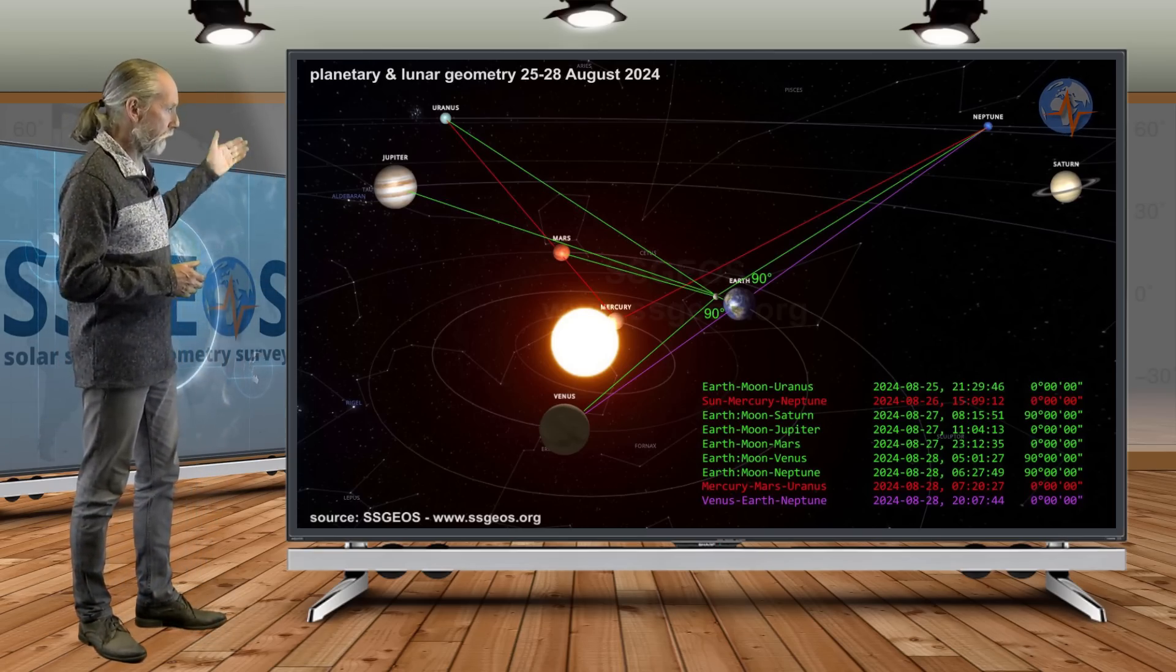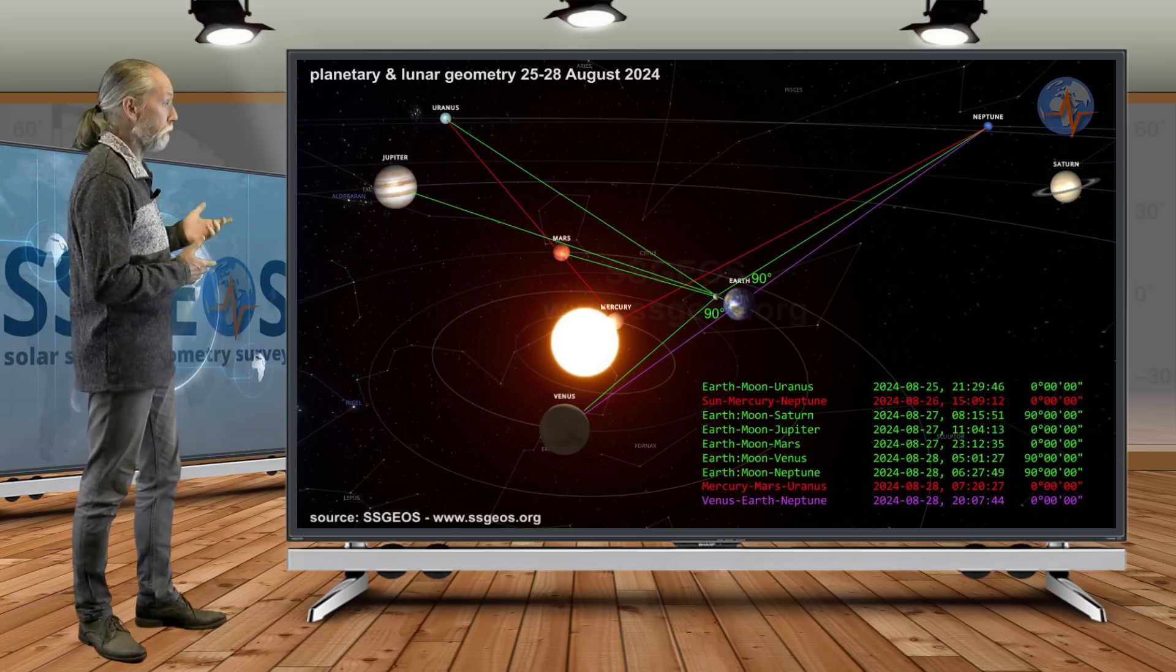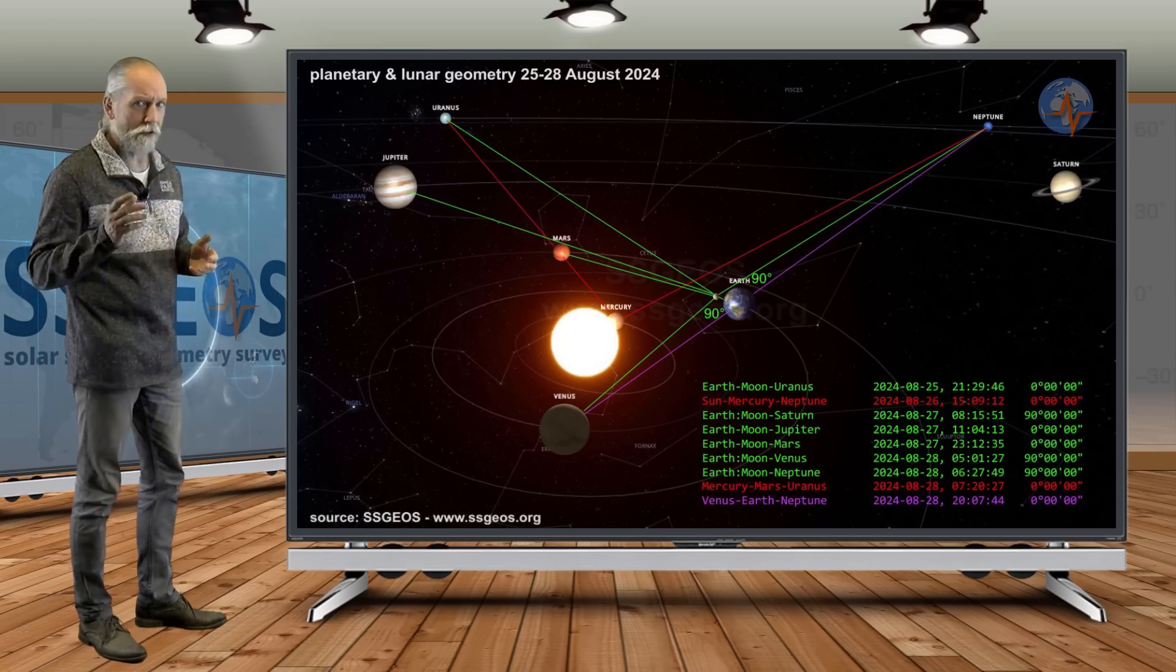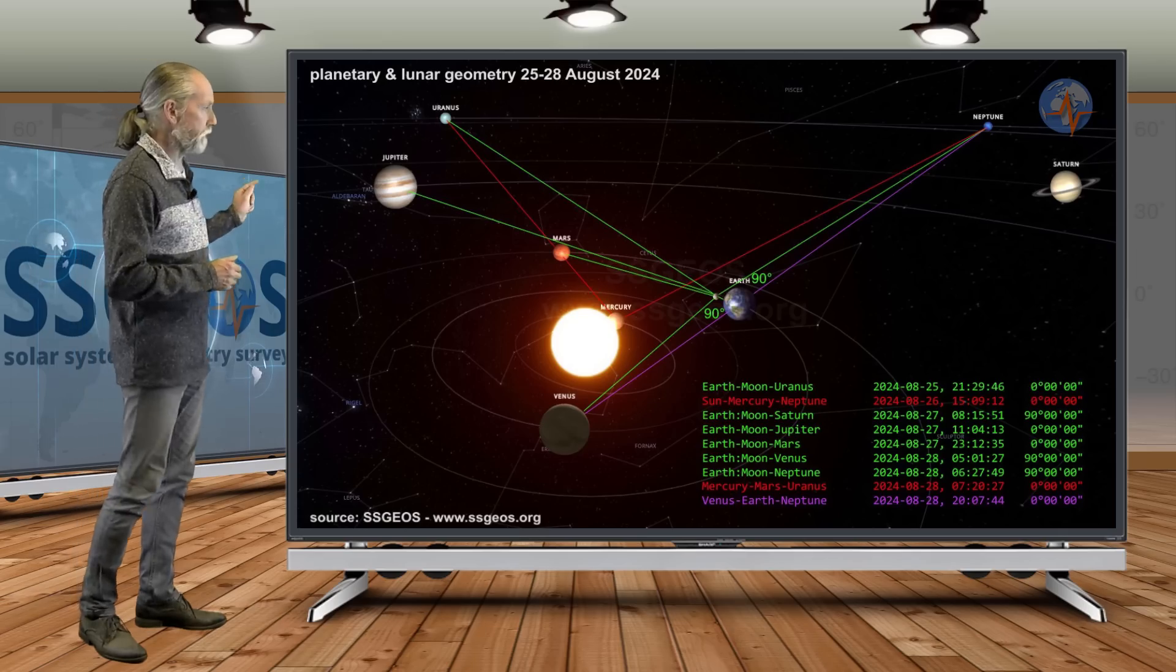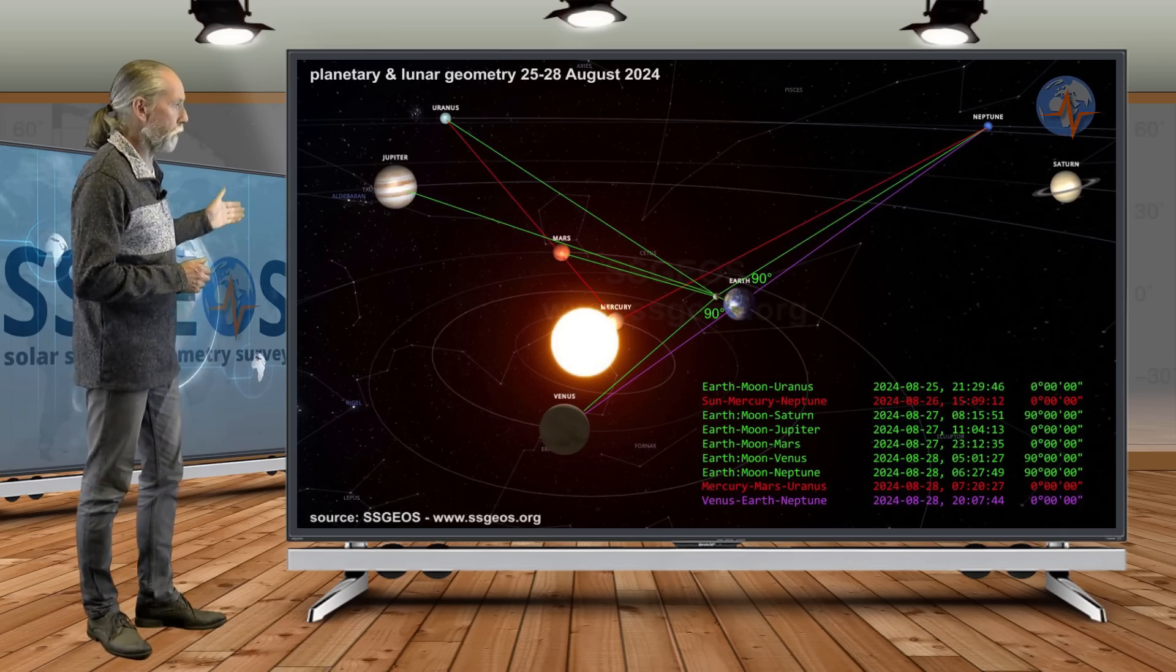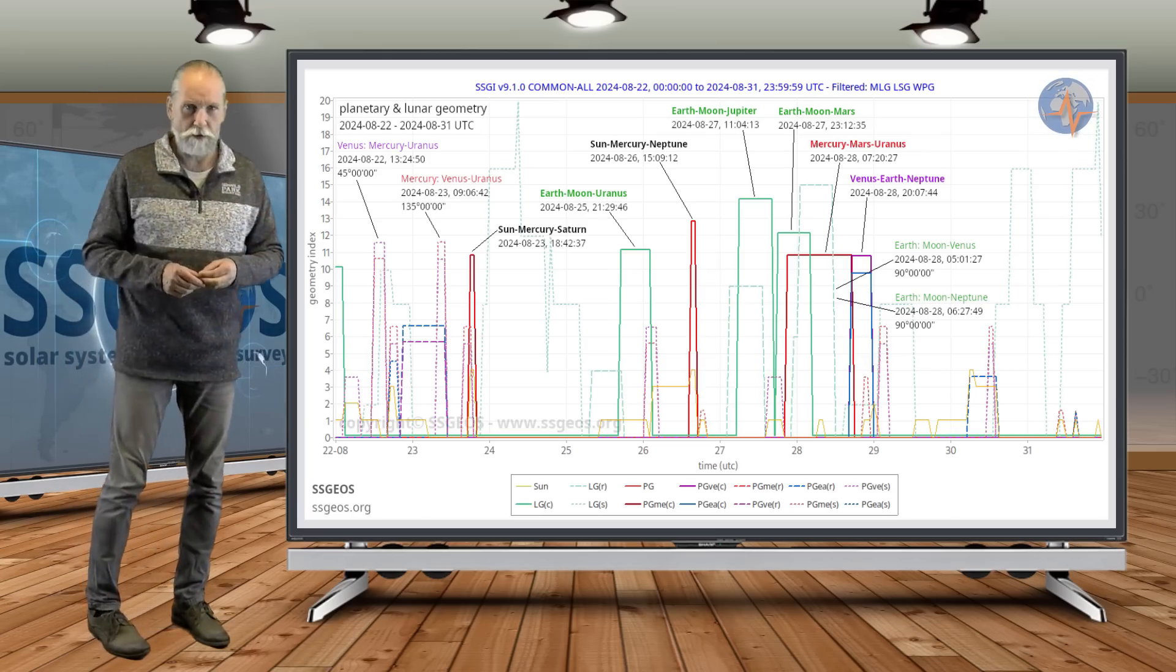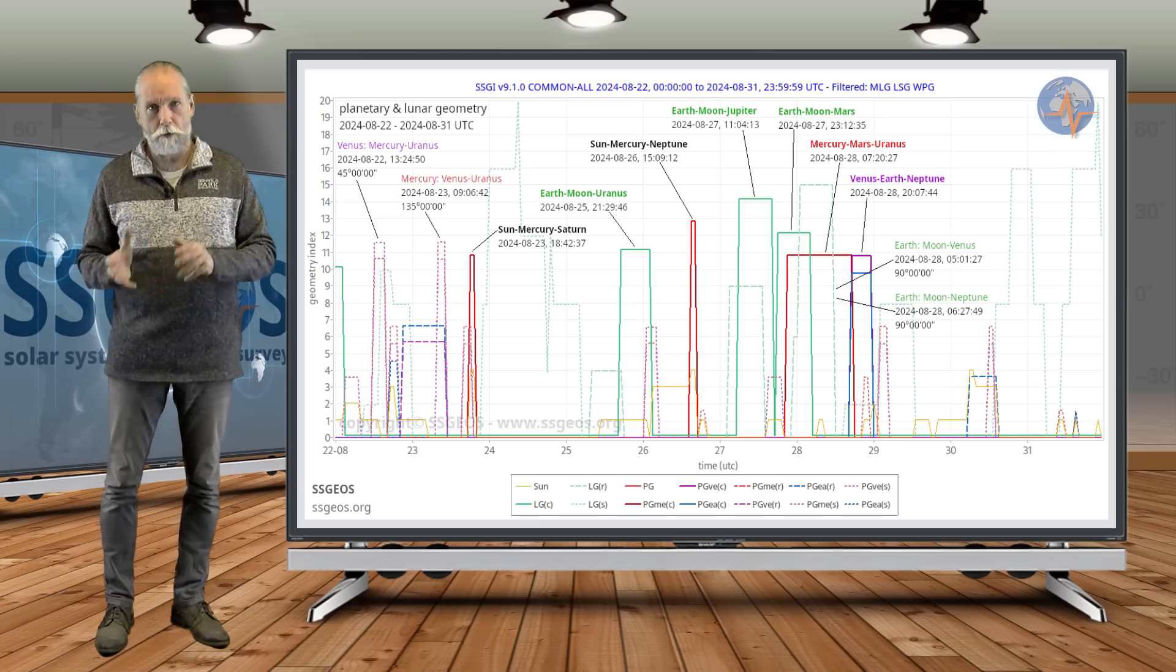So again, we see this lunar geometry on the 27th, and that's conjunctions with Jupiter and Mars. We have right angle geometry again with Venus and Neptune. Again, that is critical. And then we have Mercury, Mars and Uranus in a conjunction, and also Venus, Earth, Neptune at the same time. There are actually several hours in between. That is the geometry I think that we should pay attention to and the days following that geometry.